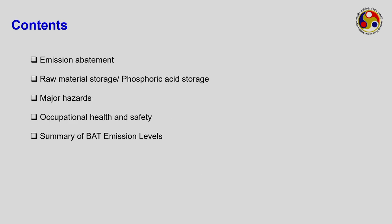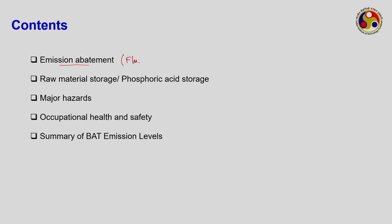In overall we will see the emission abatement — where the pollutant gases are coming from, the source of the gases. We will study mainly fluorine-based gases. Then the raw material storage, how the raw material and the product phosphoric acid should be stored. The major hazards concerning phosphoric acid, occupational health and safety, and the summary of BAT emission levels. BAT is Best Available Technique, usually followed in industries in the US and Europe, with set permission limits for the environment.